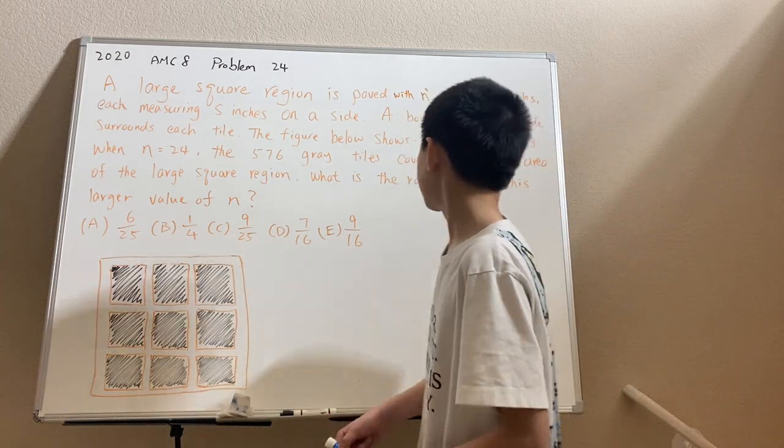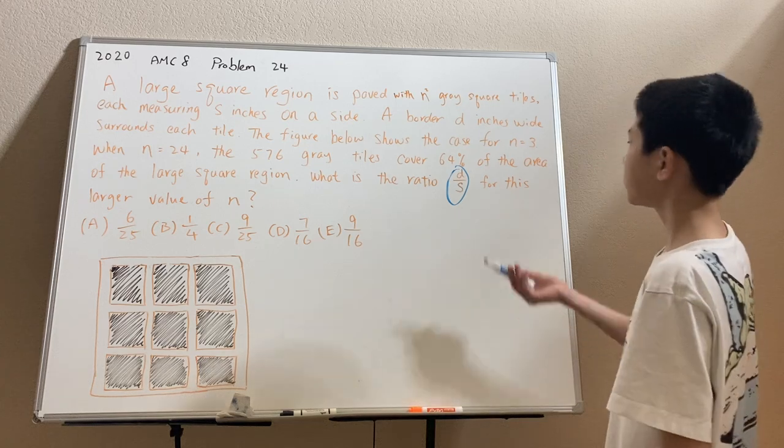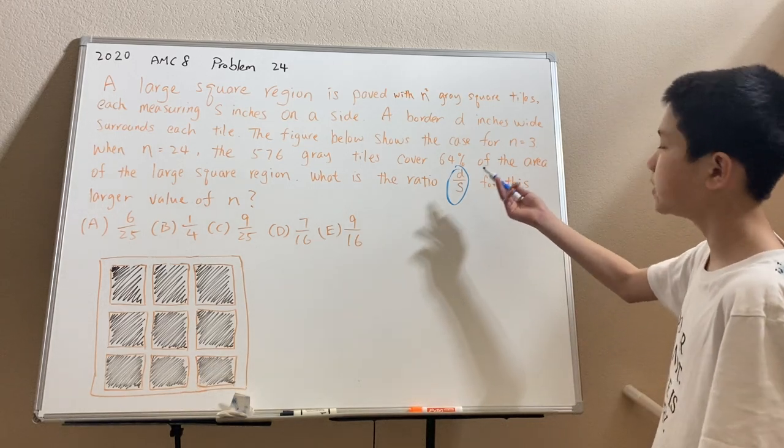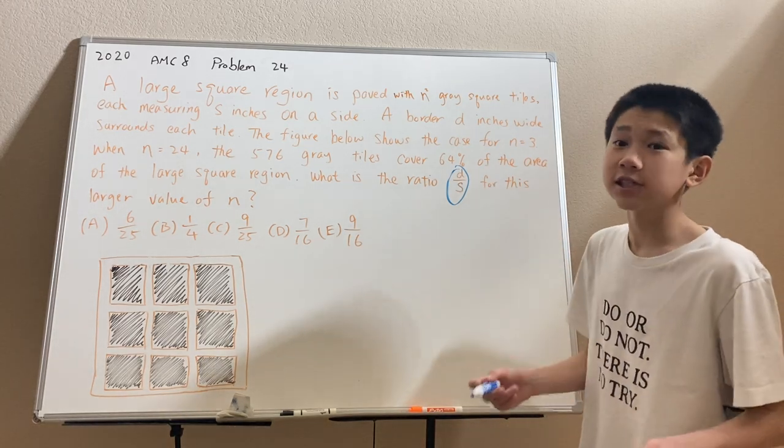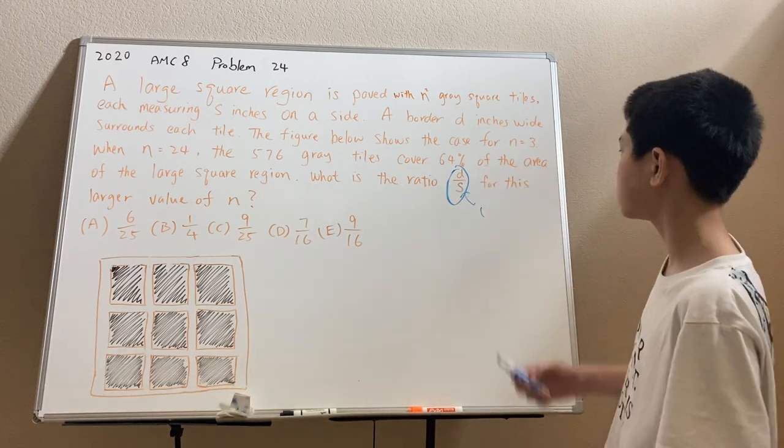So the first thing we notice here is that the problem is asking for d over s, a ratio. And we don't actually want to find the values of d or s. So this allows us to do s equals 1.